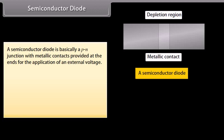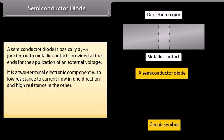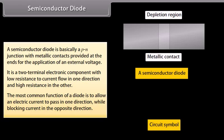Semiconductor diode: a semiconductor diode is basically a P-N junction with metallic contacts provided at the ends for the application of an external voltage. It is a two-terminal device. The arrowhead corresponds to the P-type terminal of the device and points in the direction of easy current flow. It is a two-terminal electronic component with low resistance to current flow in one direction and high resistance in the other. The most common function of a diode is to allow electric current to pass in one direction while blocking current in the opposite direction.